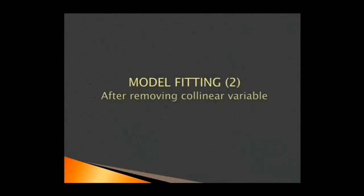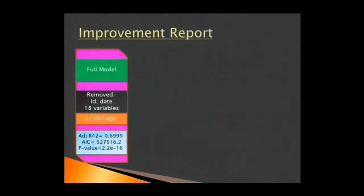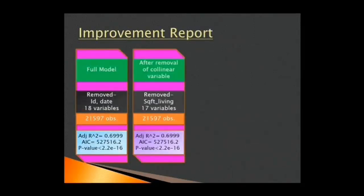After removing collinear variable, we fit a model and obtain the following result. This result shows that there is no change from the previous regression analysis. Though there is no improvement in AIC, adjusted R square and P value compared to the previous regression analysis, yet it is better to remove the collinear variable to keep our model multicollinearity free. So, we proceed with the new model.